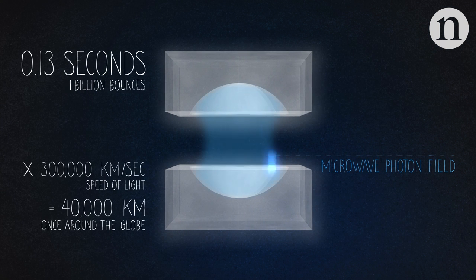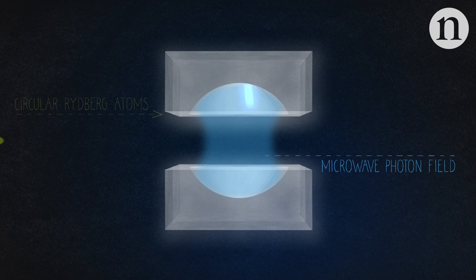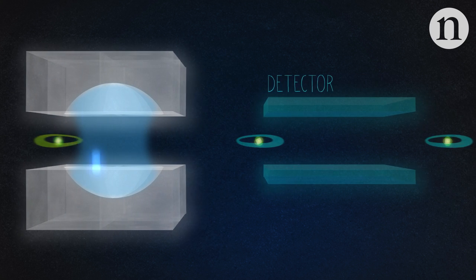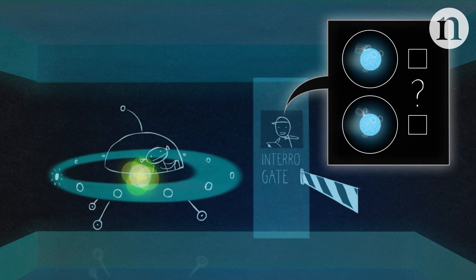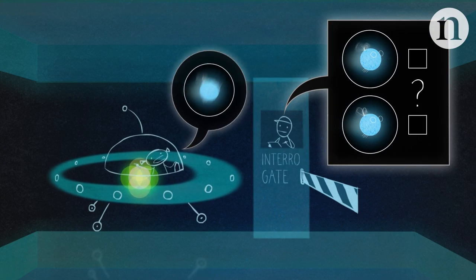We were able to keep the photons for about one tenth of a second, and then we sent atoms one by one through the box. The atoms were just picking some information from the photons, getting out, and then we interrogated the atoms to ask them what they had seen in the box.